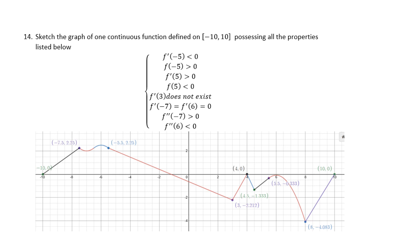It must be increasing at 5, and the y coordinate at 5 has to be negative. There must be an abrupt change of direction at the point 3, so the derivative doesn't exist. The function has relative maxes and mins at minus 7 and 6, and it is concave up at minus 7, and it is concave down at 6.